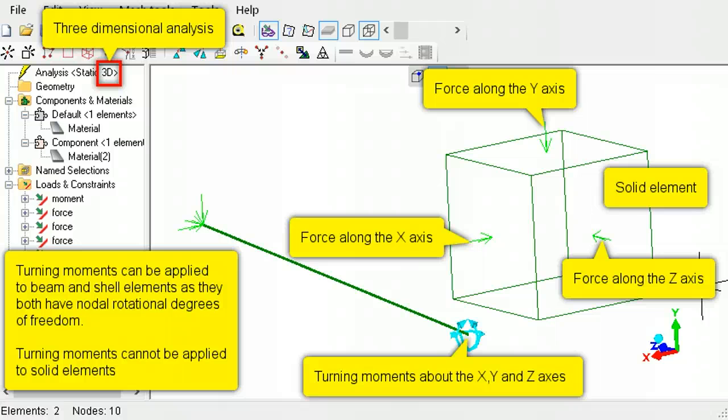In three-dimensional analysis, a force can be applied along the x, y, and z axis directions. For beam and shell elements, a turning moment can be applied about all three axes.